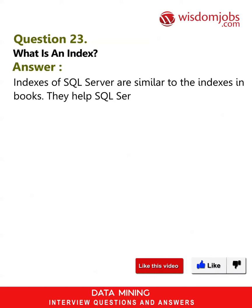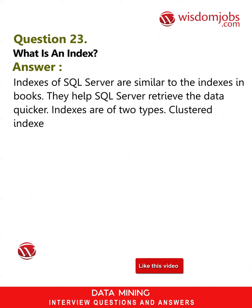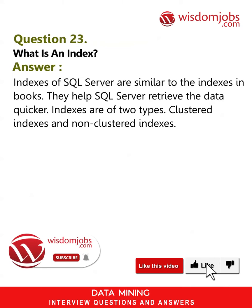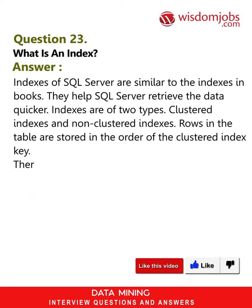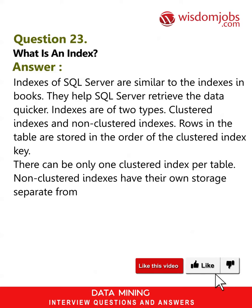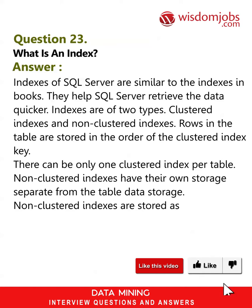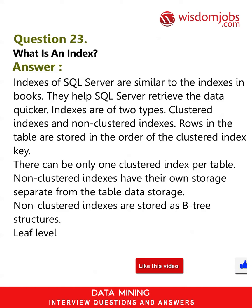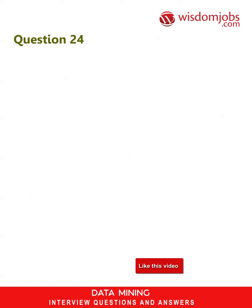Indexes help SQL Server retrieve the data quicker. Indexes are of two types: clustered indexes and non-clustered indexes. Rows in the table are stored in the order of the clustered index key. There can be only one clustered index per table. Non-clustered indexes have their own storage separate from the table data storage. Non-clustered indexes are stored as B-tree structures, with leaf-level nodes having the index key and its row locator.